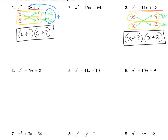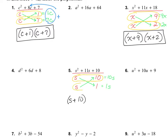Let's take a look at number 5. The first term is s squared, so my only choice is s times s. My last term is 10. If it multiplies to 10, we want it to add to 11. If we did 5 and 2, that would be 7, which is not right. But 10 and 1 does work: s times 1 is 1s, and s times 10 is 10s. Adding those together gives 11s, which matches the middle. My answer is straight across: s plus 10 and s plus 1.